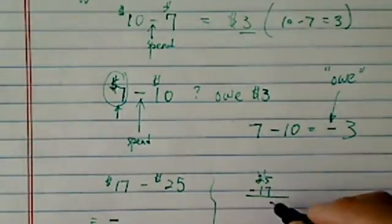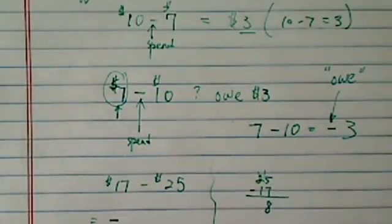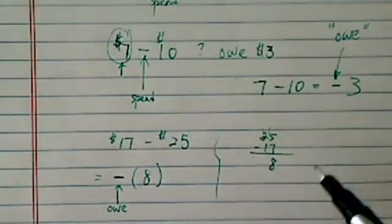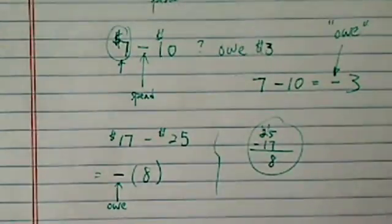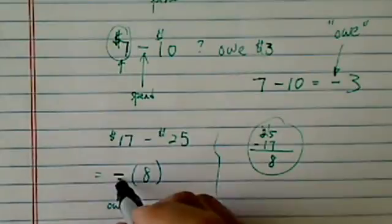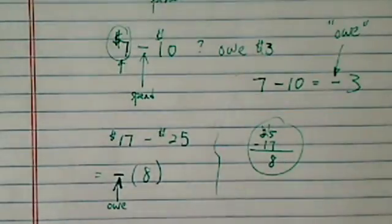We're going to buy out 15. This is 8. So we owe $8. The only difference is we still do the subtraction that we used to do. Put the bigger number on top and the smaller number on the bottom. The only difference now is we put a minus sign in front to signify that we owe money.